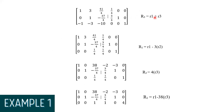Next, to make the leading entry of row 3 equal to 0, we use R3 equals the current row 1 added to the current row 3. We get: [1, 3, 41/4, 1/4, 0, 0; 0, 1, negative 37/4, 3/4, 1, 0; 0, 0, 1/4, 1/4, 0, 1]. Then we subtract the current row 1 by 3 times the current row 2 to make that column entry 0.